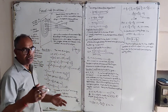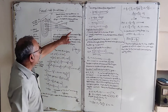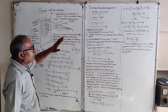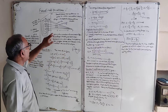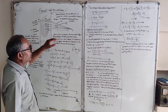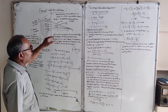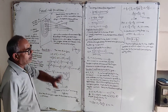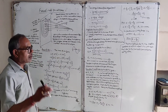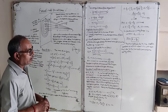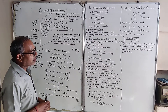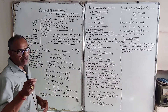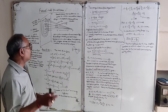So the amplitude due to the complete wavefront at a point in front is R = r1/2, which is just half that due to the first half period zone acting alone.